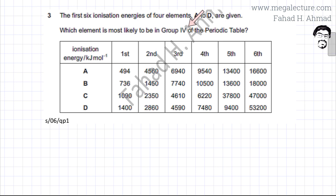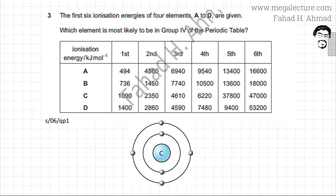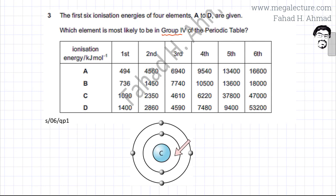I'm going to first draw an atom from group four — let's draw a carbon atom. So here I've drawn an atom from group four. There are two electrons in the inner shell, which is closer to the nucleus, and there are four electrons in the outer shell, which is further away from the nucleus.